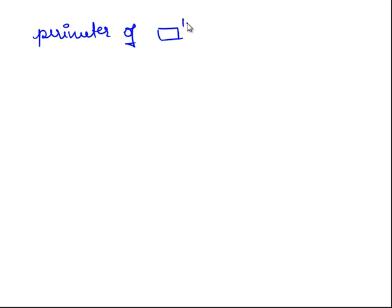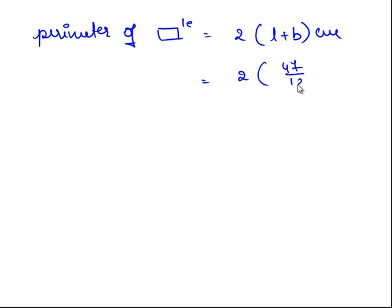According to the formula for the perimeter of a rectangle, it is 2 times (L plus B) centimeters. Since L plus B is 47/12 centimeters, the perimeter of the rectangle is 2 times 47/12, which equals 47/6 centimeters.